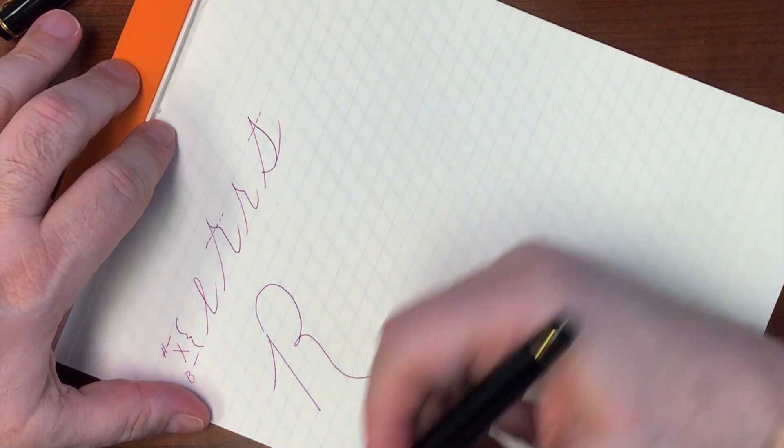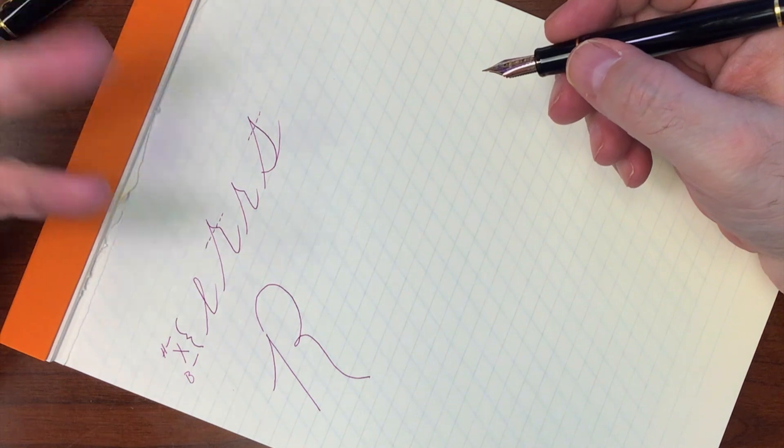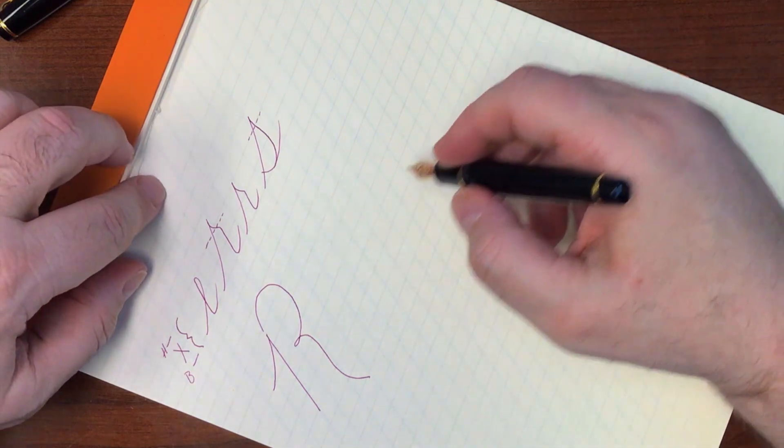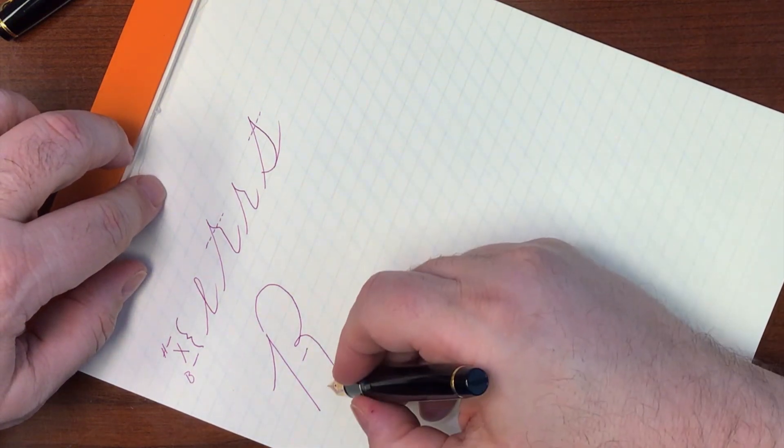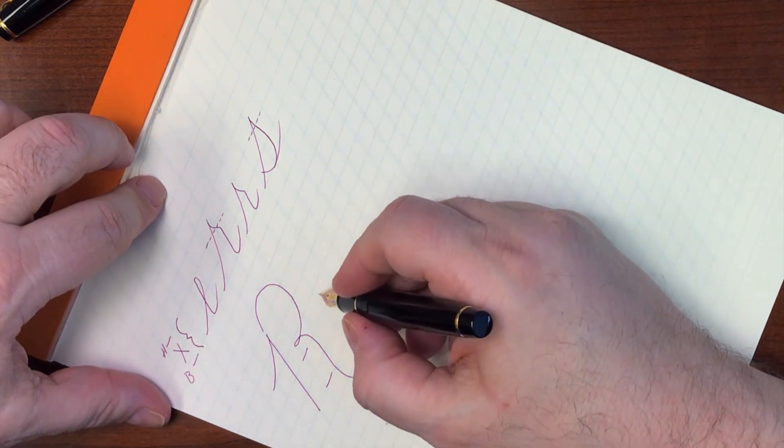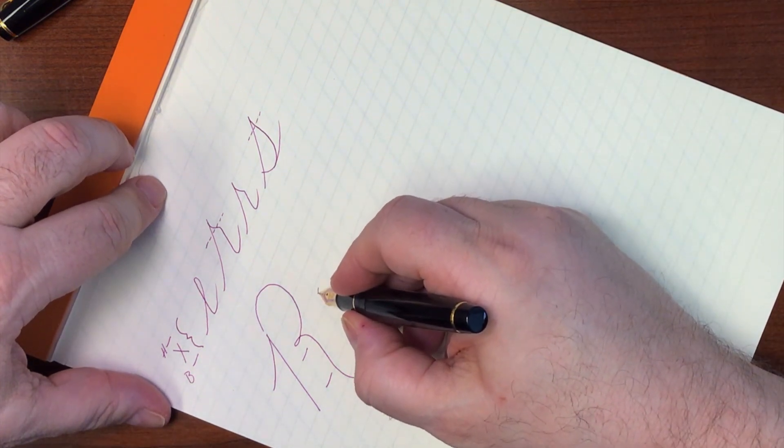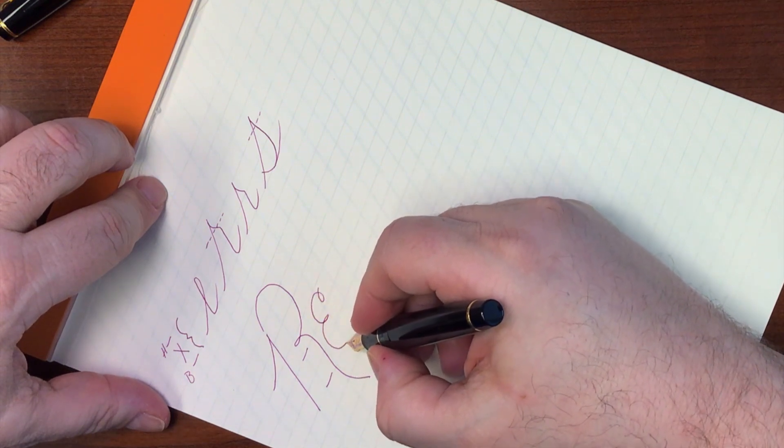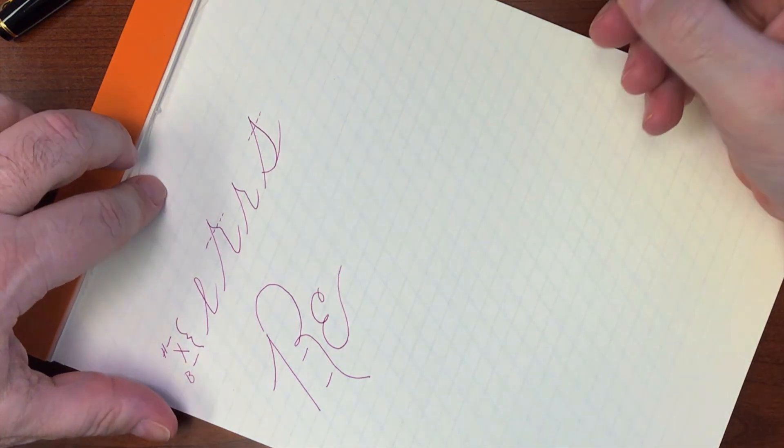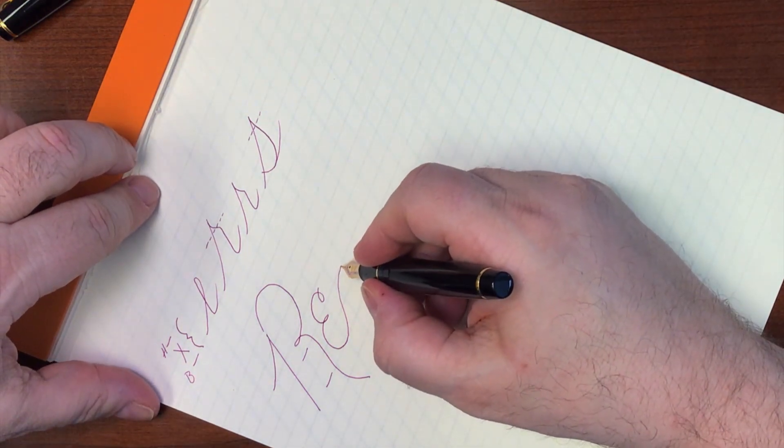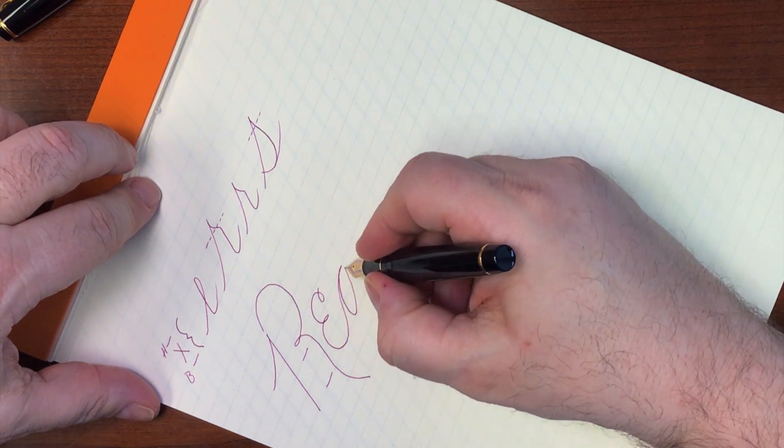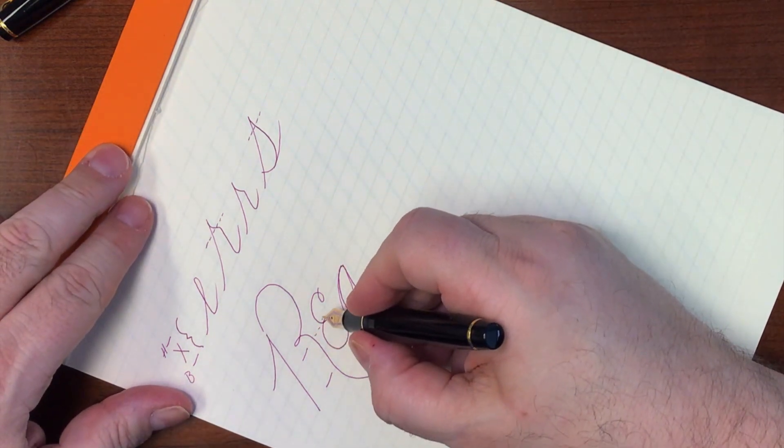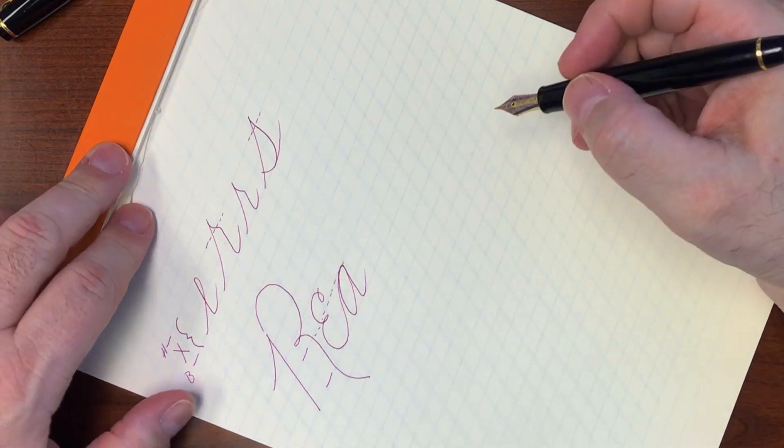And I'll do a more traditional shaped R like this. Capital R. Okay? And let's say we're going to write the word real. The second letter would be, or rebel, the second, the first lowercase letter, or the second letter overall would be an E. And if this is the header line and this is the baseline, the E could be started like this, almost like a pseudo capital.